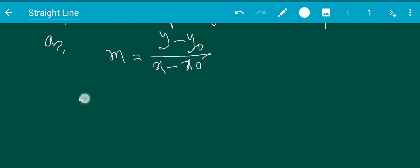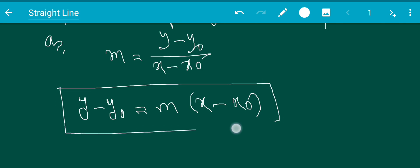From this we can say y - y₀ = m(x - x₀). So this is the equation of line.